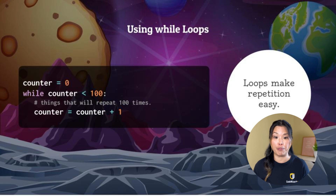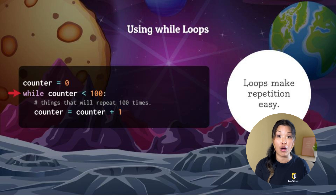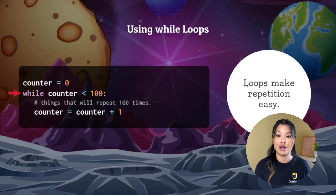The while loop has three different parts. First, we have a counter that we have to initialize, and this tells our while loop where to start. The next step is how many times do we want to repeat this code — we're going to say while counter is less than 100 colon. So when this counter number is no longer less than 100, we're going to stop going through the loop, but while it's less than 100 we're going to continue to do the actions inside of the loop. And then this third part is going to be increasing the counter — so every time we go through the loop, we're going to increase the counter by one.